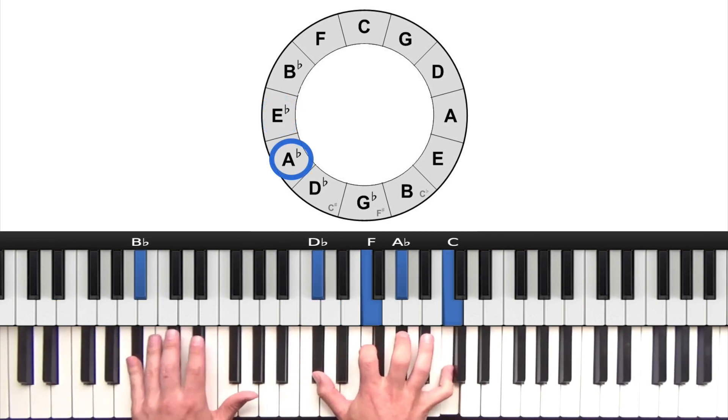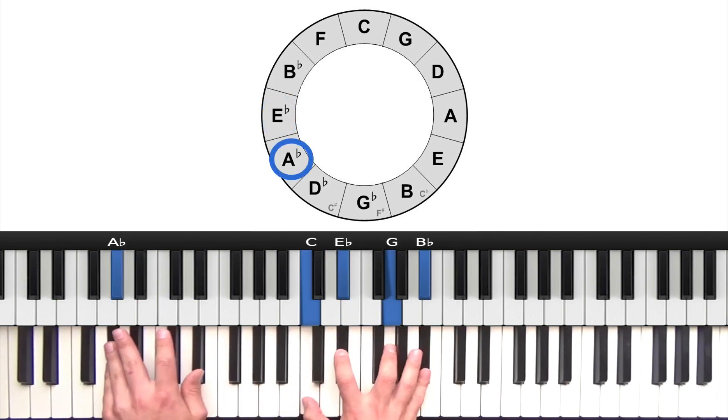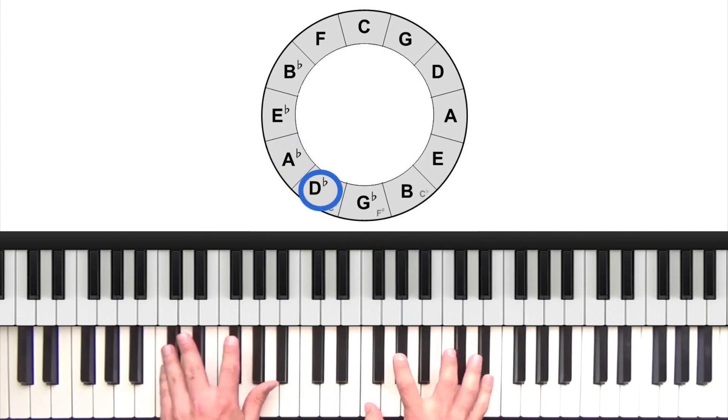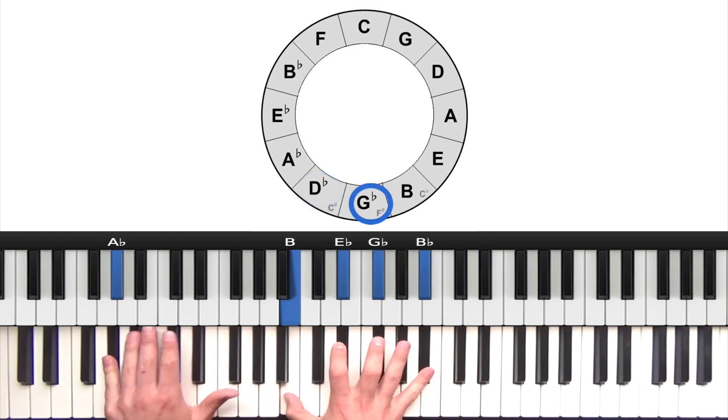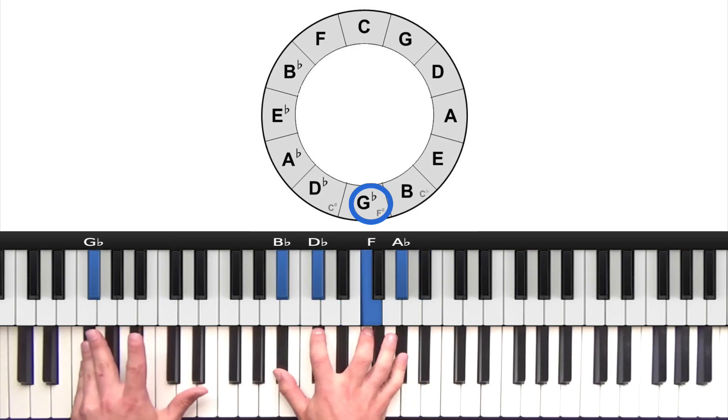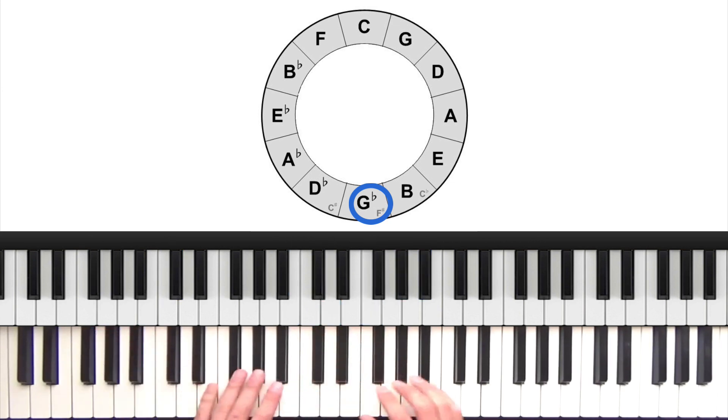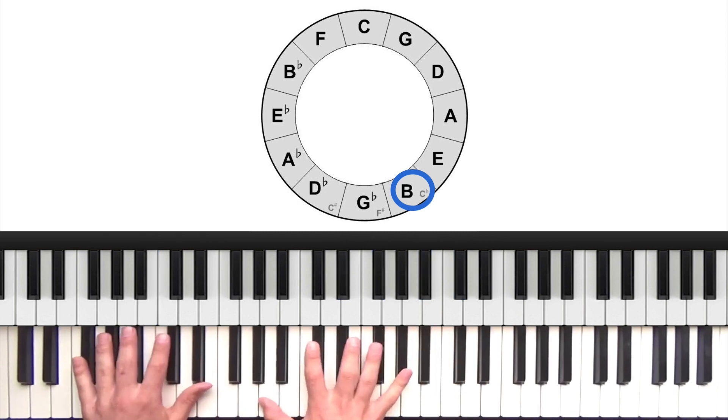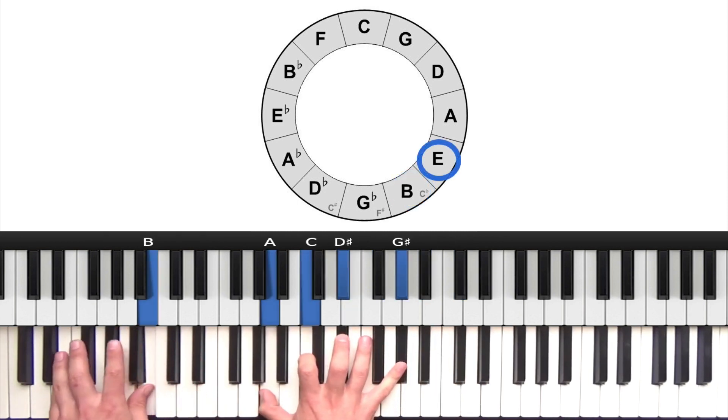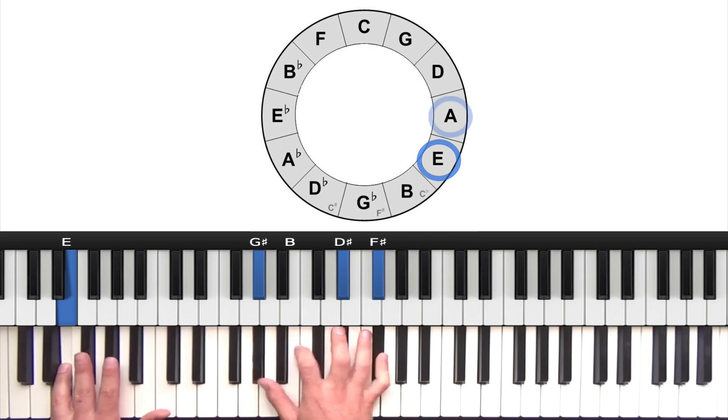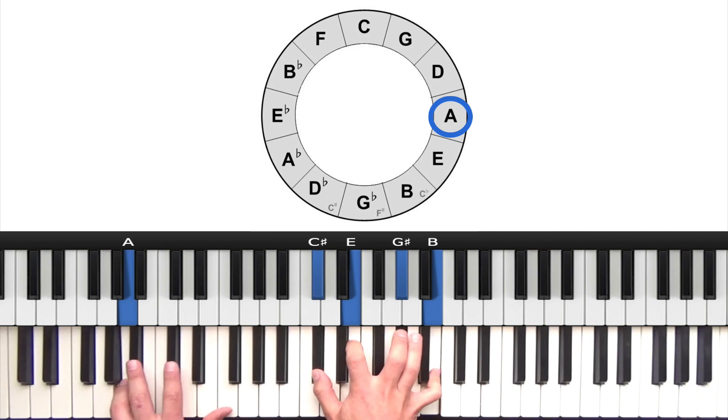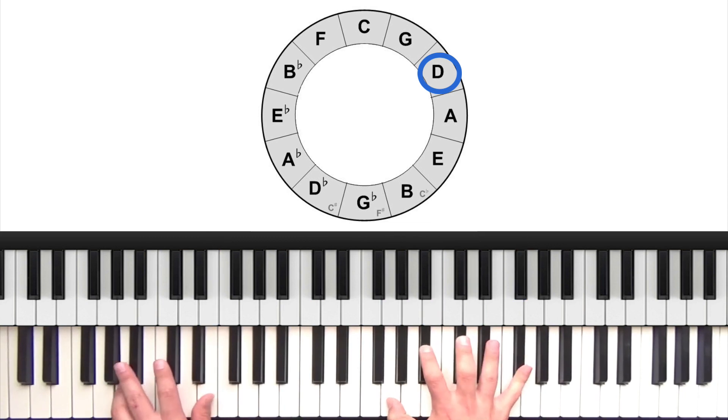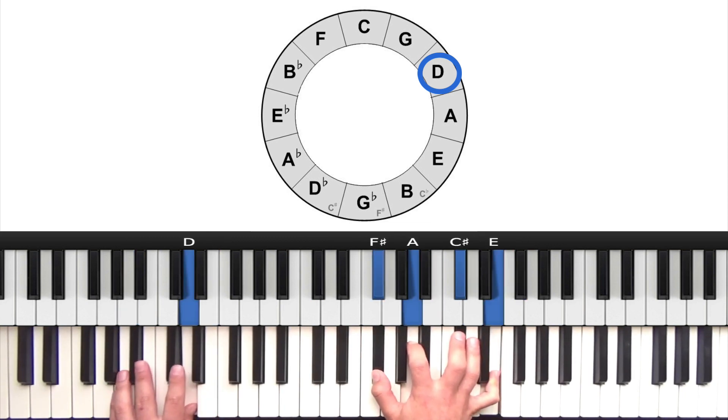A 2-5-1 in E flat. A 2-5-1 in A flat. A 2-5-1 in D flat. A 2-5-1 in G flat. A 2-5-1 in B. A 2-5-1 in E. A 2-5-1 in A. A 2-5-1 in D. And finally, a 2-5-1 in G.